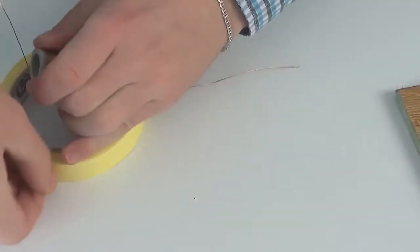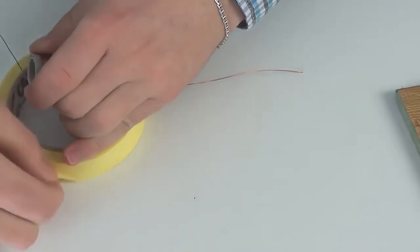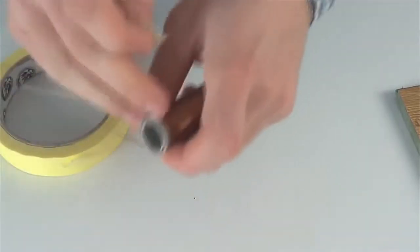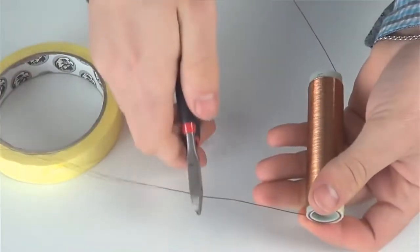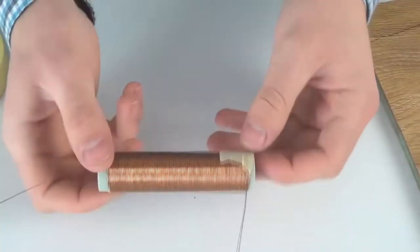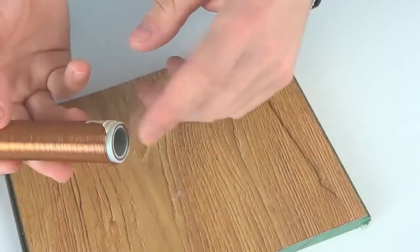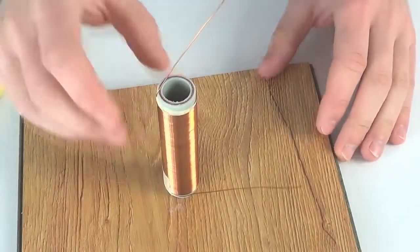We are fixing the wire with scotch so it won't unspool. That's all, the coil is ready and now we are sticking it to the base with glue.